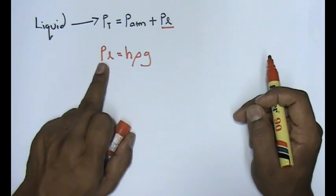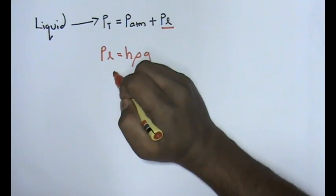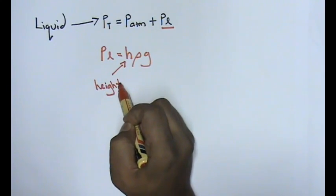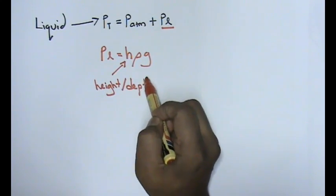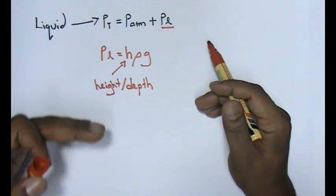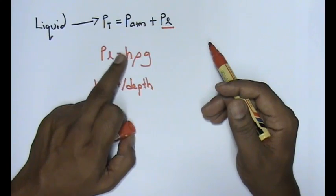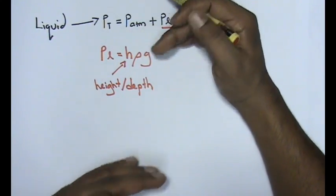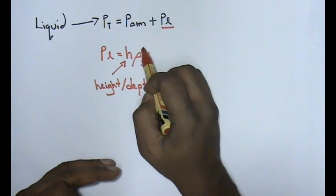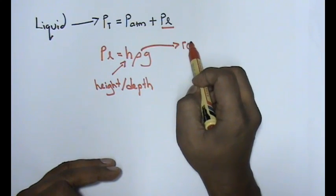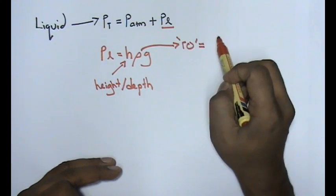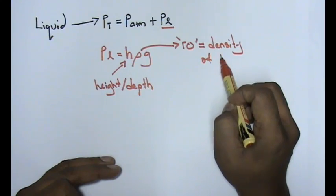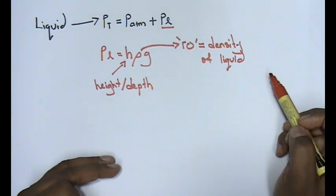Now for liquid pressure h·ρ·g, your h basically stands for height or the depth of water. How deep the object is inside water, that is what we call height here, or how deep that container is for height or depth. ρ here, rho, basically refers to the density of liquid.